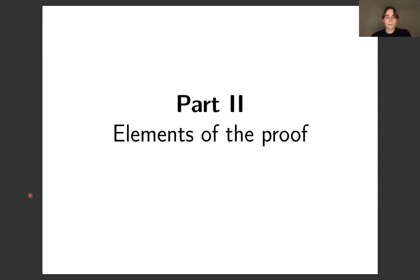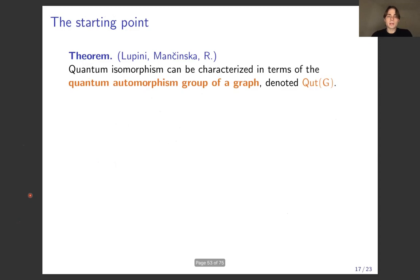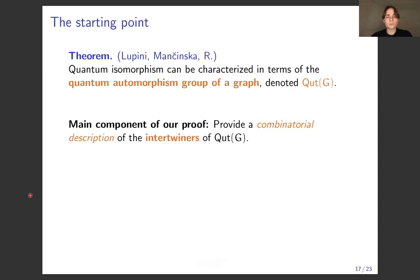Now a little about the proof. It starts with a previous result connecting quantum isomorphism to the quantum automorphism group of a graph. These sound similar but are defined completely independently — quantum isomorphism is defined via non-local games, while the quantum automorphism group is a very abstract object defined in terms of universal C*-algebras. Before the connection to quantum isomorphism was made, it didn't have a link to anything physical. The key combinatorial part of the proof gives a combinatorial description of the intertwiners of the quantum automorphism group.